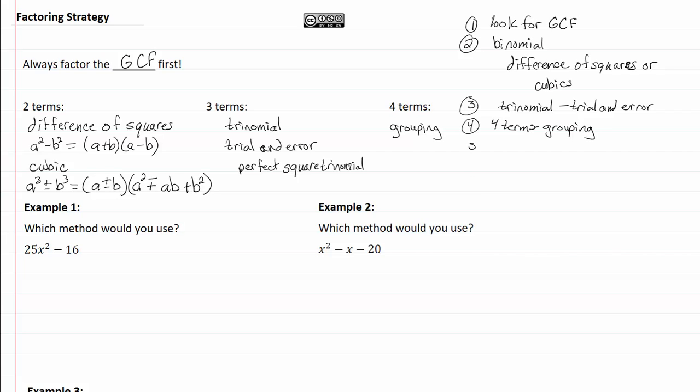And then very last, can it be factored again? Meaning do you still have a difference of squares? Do you have a common factor inside the parentheses? That is a really good strategy to always look, can it be factored again?